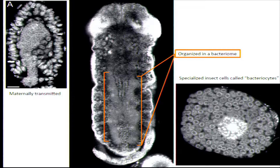These bacteria are usually maternally transmitted. Here on the left we have an image of Bucknera invading an embryo very early in development. Bucknera are the small round cells in the middle; the bigger cells are the aphid cells on the outside. Often these symbiont cells get organized into an organ called the bacterium, visible in an embryo down each side of the body. They live in specialized insect cells called bacteriocytes, which aggregate to make the bacterium.